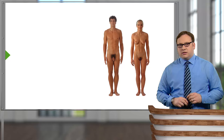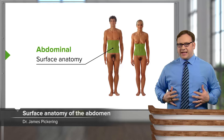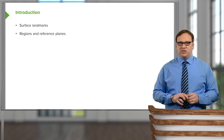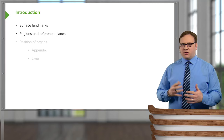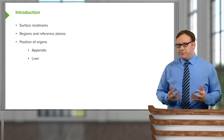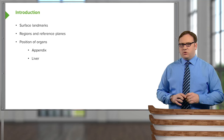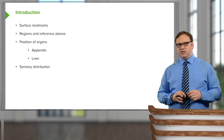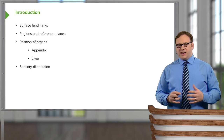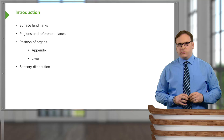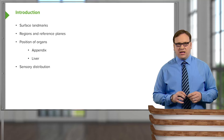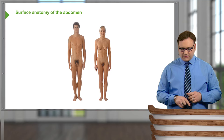In this lecture, we're going to look at the surface anatomy of the abdomen. We're going to look at various surface landmarks which we can observe on the anterior and lateral aspects of the abdomen. We're going to use these landmarks to create various reference planes and regions, and then using these regions, locate the position of organs within the abdomen — for example, where the appendix and the liver are located. Towards the end of the lecture, we'll importantly look at the sensory distribution, how the skin of the abdomen receives its sensory innervation and how this passes back to the spinal cord, and how this relates to pain from pathologies within the abdominal viscera.